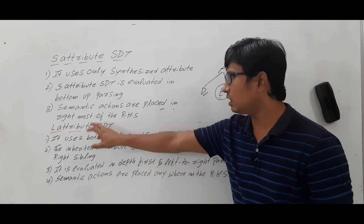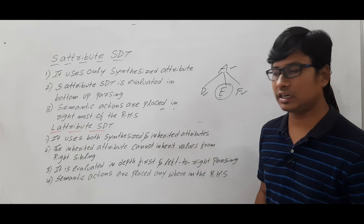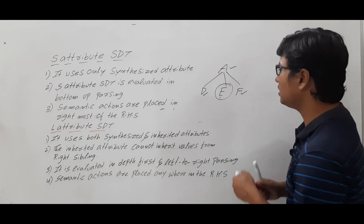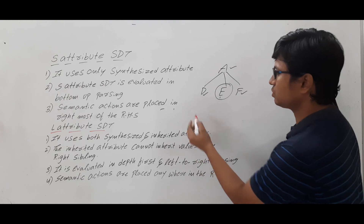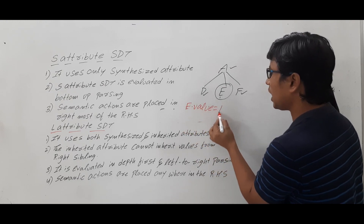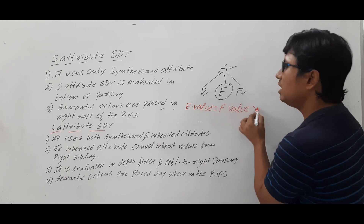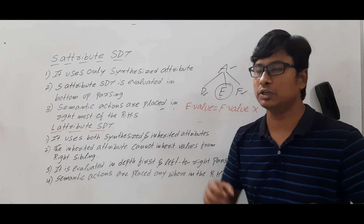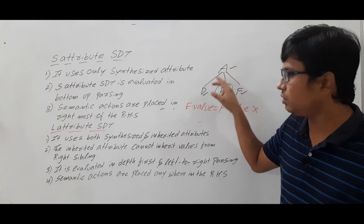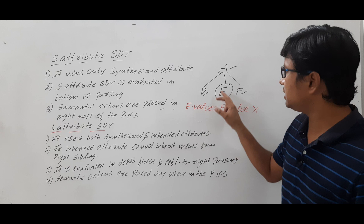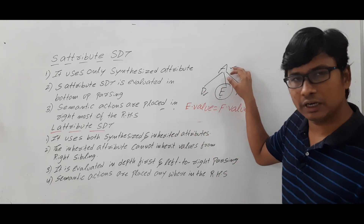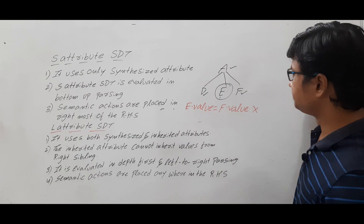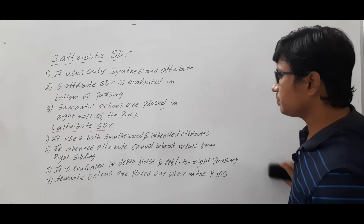The restriction in L-attribute SDT: it uses synthesized and inherited attributes, but the inherited attribute cannot inherit values from the right sibling. For E in A → DEF, the right sibling is F, so E.value = F.value is not permitted in L-attribute SDT. Usually an inherited attribute can take values from the parent, left sibling, or right sibling, but in L-attribute SDT you can take from the parent or left sibling only — not the right sibling.